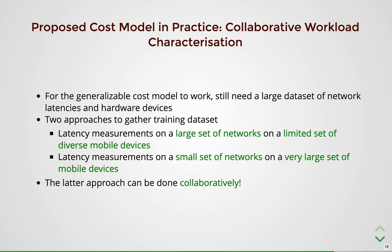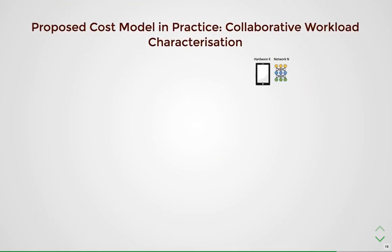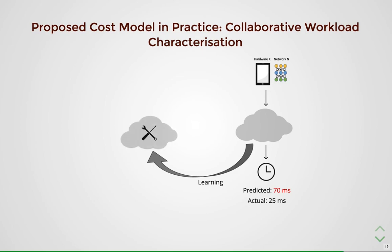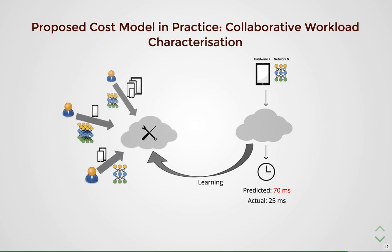This approach, which we call collaborative workload characterization, presents a practical setting where the cost model is built in a shared manner with small contributions from a large number of people who collectively benefit from the superior model, alleviating the training dataset bottleneck. To illustrate: consider a scenario where we want to know the latency of network N on hardware K. Initially, when the model is not trained, predictions will be way off. We bridge this gap by training collaboratively — different people contribute different amounts of training data and hardware representations, and as more users contribute, the cost model becomes more accurate over time.